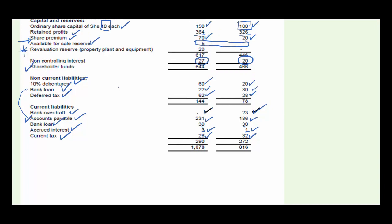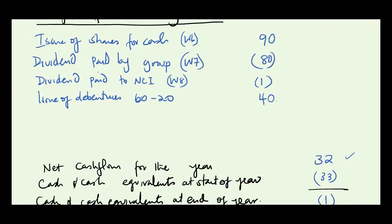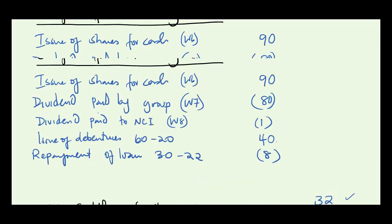Checking for any missed items: there is a bank loan that moved from 30 to 22 — a repayment of 8 — which needs to be posted under financing activities as a cash outflow for repayment of loan. With that, all items should now be covered.